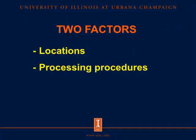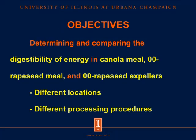So we now know that two factors that could affect nutritional values of canola and rapeseed meal are: the location where canola and rapeseed are grown, and the processing procedures used to remove oil. Therefore, the objectives of this experiment were to determine and compare the digestibility of energy in canola meal, double-zero rapeseed meal, and double-zero rapeseed expellers from different locations and different processing procedures.